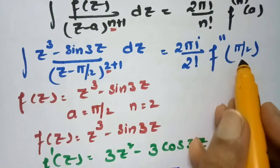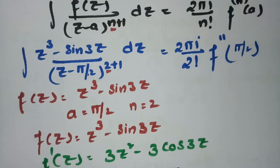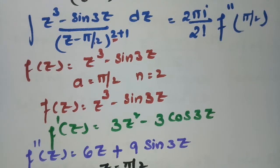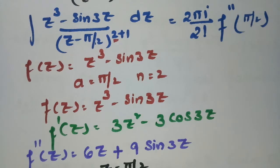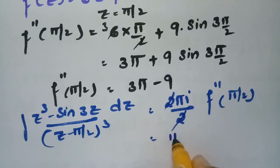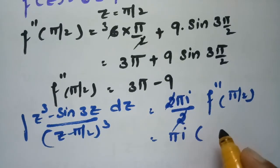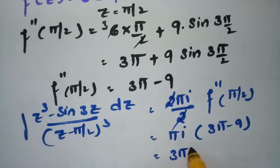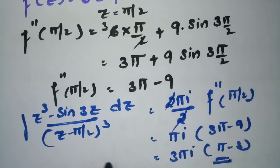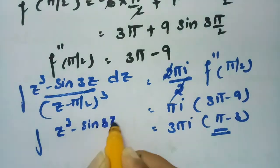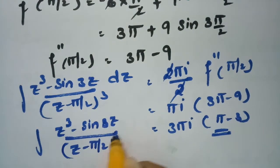Substituting f''(π/2) = 3π − 9 into the formula: the integral = (2πi/2!) · (3π − 9) = πi · (3π − 9). Taking 3 as a common factor gives 3πi(π − 3). This is the value of ∫ (z³ − sin3z)/(z − π/2)³ dz.